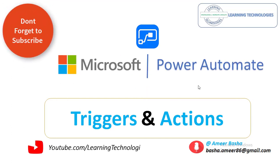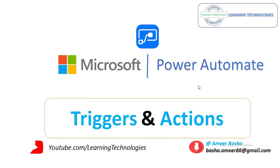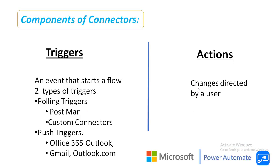Hello Techies, welcome to Microsoft Power Automate tutorials. In the previous module, we learned about connectors. Now in this module, we will learn about triggers and actions of a connector. Each connector offers a set of operations which are classified as actions and triggers. Once you connect to the underlying service, these operations can be easily leveraged with your apps and workflows.